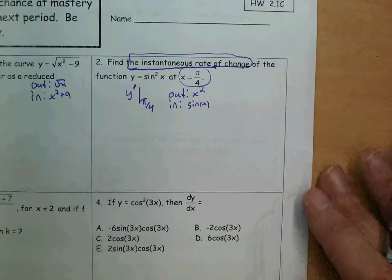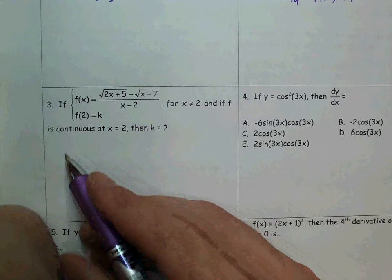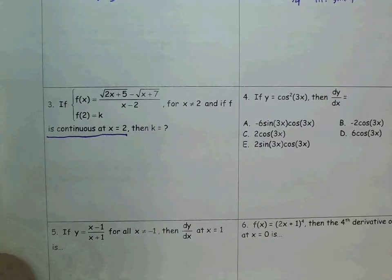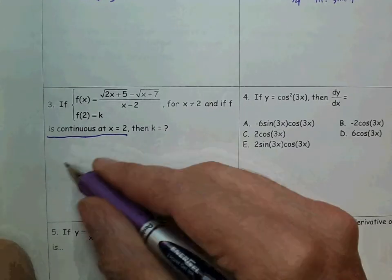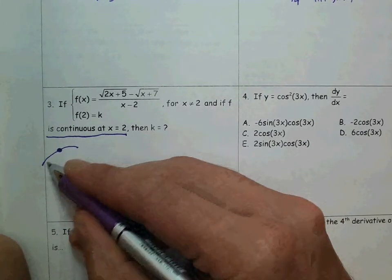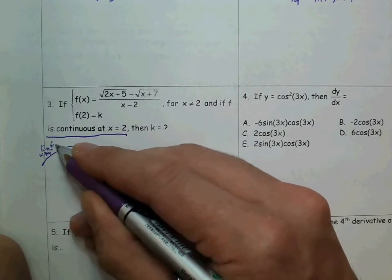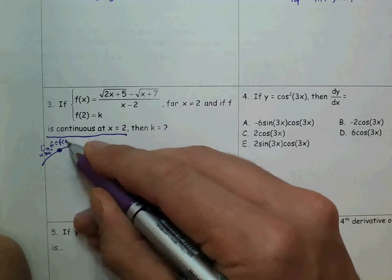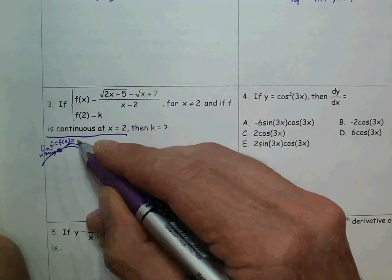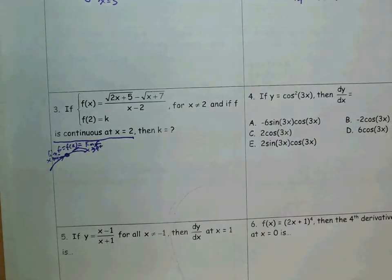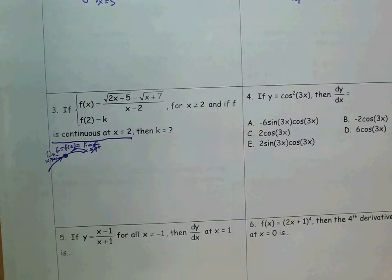Number three: what you should notice is it's asking whether this function is continuous at x equals 2. You've got to reach back to find out if something's continuous. Remember, the definition of continuous involves limits. For something to be continuous at a point, the limit as x approaches that value from the left has to equal f of that value, which also needs to equal the limit as you come from the right. So the limit from the left and the limit from the right need to equal the function value. You're going to need to do a limit and use your limit evaluating skills.